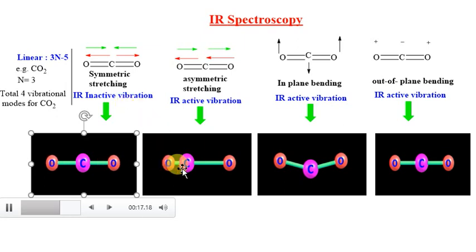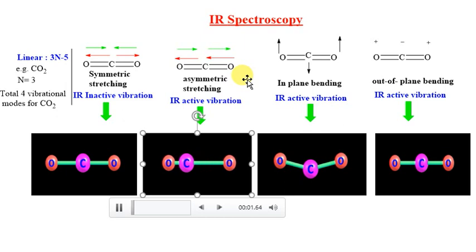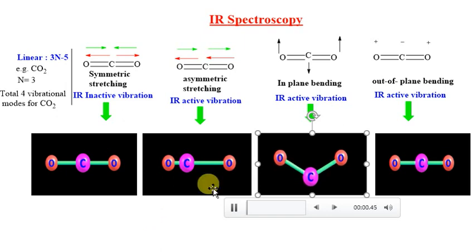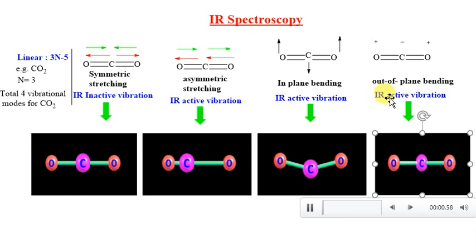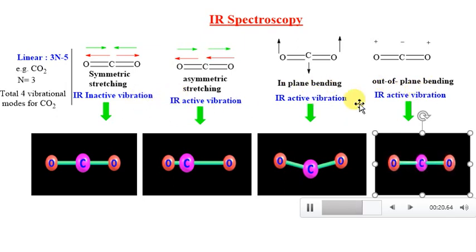The second vibration is asymmetric stretching. In asymmetric stretching there is a change in dipole moment, so this vibration is IR active. Third is in-plane bending — during this, dipole moment change happens, so this vibration is also IR active. Similarly, out-of-plane bending also involves a change in dipole moment and is therefore IR active. Overall, CO2 is an IR active molecule with 1 IR inactive vibration and 3 IR active vibrations.